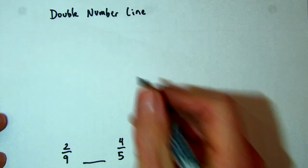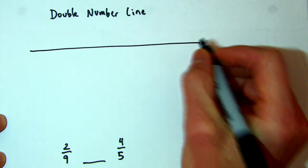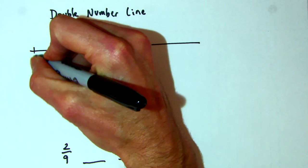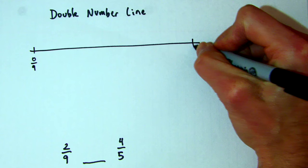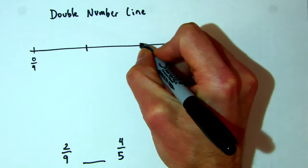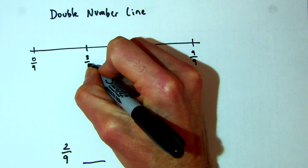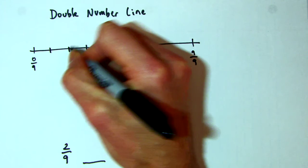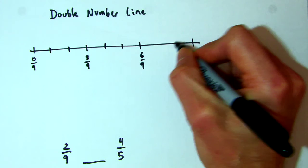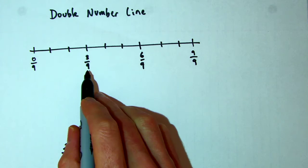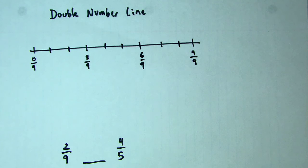I'm going to create a number line up here, and this is going to be ninths. This is 0/9 and this is 9/9. I'll mark 3/9 and 6/9, and I've got 1, 2, 3, 4, 5 sections. So 1/9, 2/9, 3/9, 4/9, 5/9, 6/9, 7/9, 8/9, 9/9.